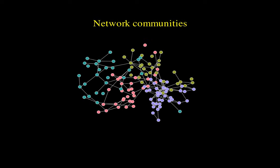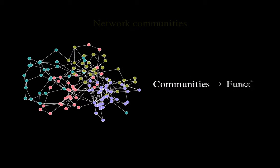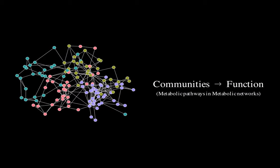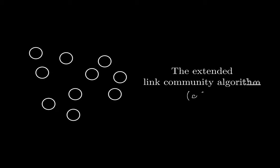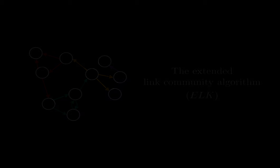In network science, communities are important because they normally are associated with the functional components of a system. So to discover the communities in the network, we extended the link community algorithm to work with neural networks. This algorithm is characterized by classifying links instead of nodes.